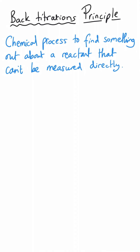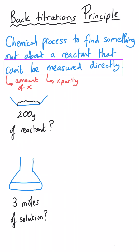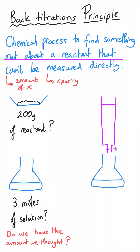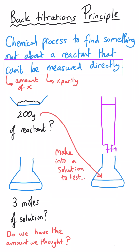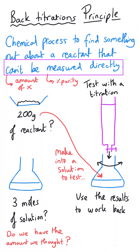Back titrations are similar to regular titrations but their purpose is to find out something about a particular chemical or reactant that couldn't be measured directly — for instance, to determine the amount of a particular reactant or its purity. In its simplest sense, we might take a substance where we think we have a certain mass or moles of it, do the titration, and then look at the results to determine how many moles or what mass we actually had.